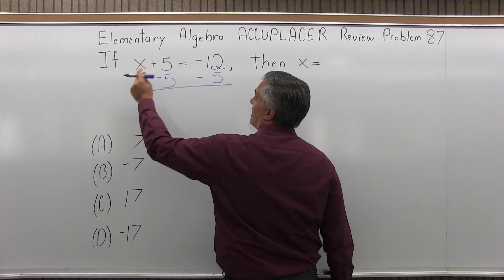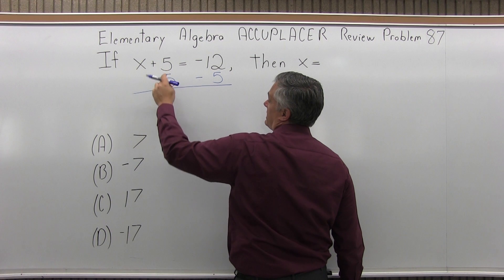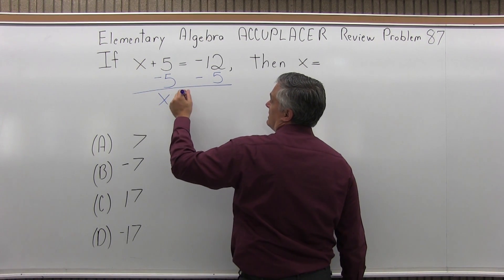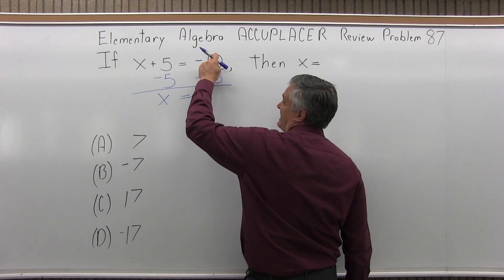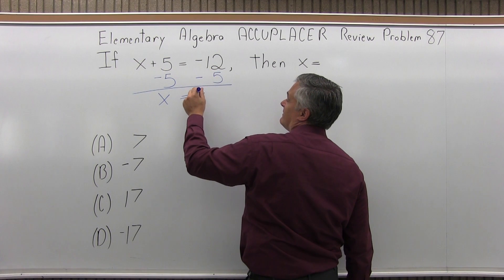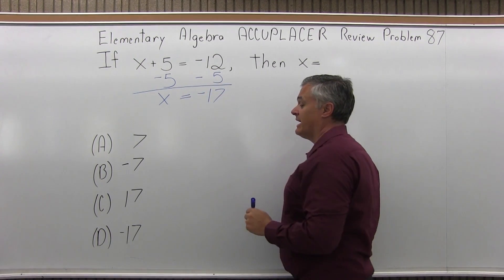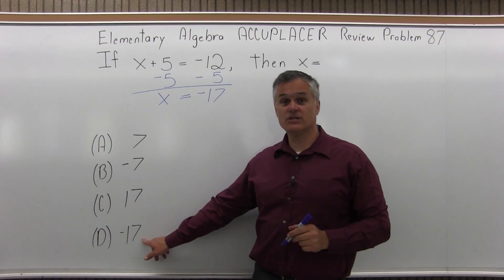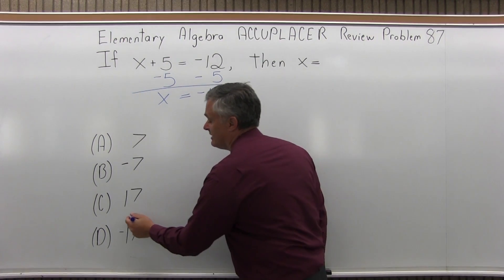When I do that, x plus 5 minus 5 just gives me an x. And on the right side of the equals sign, negative 12 and negative 5 is negative 17. Fortunately, negative 17 is one of my options — it's option D.